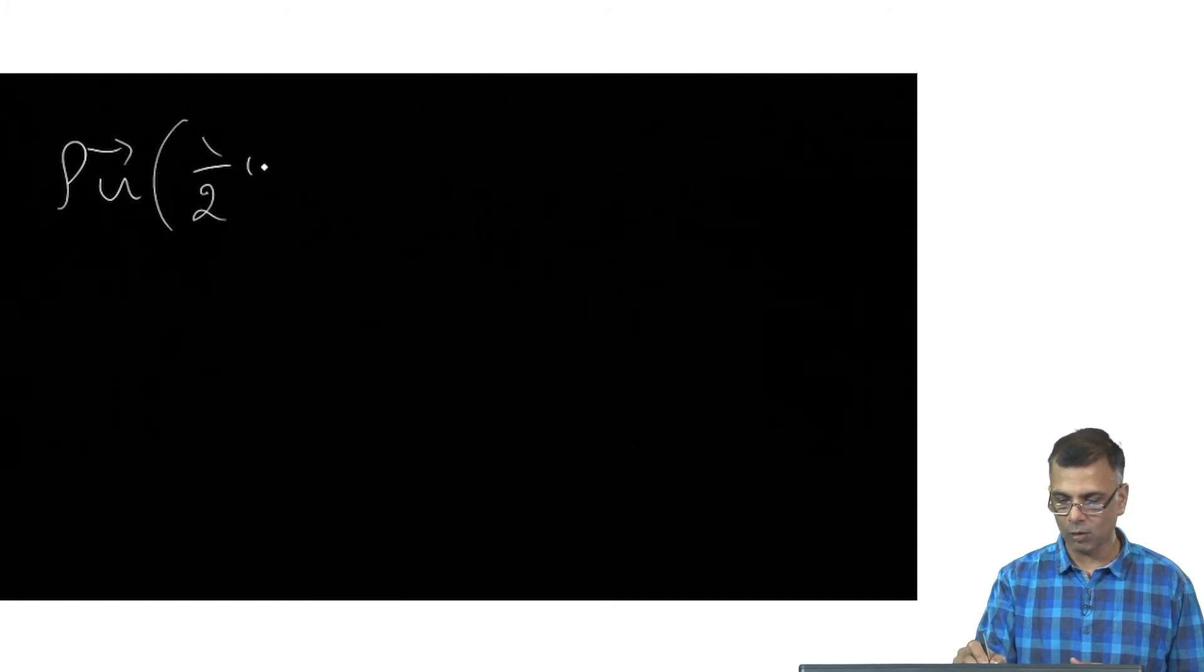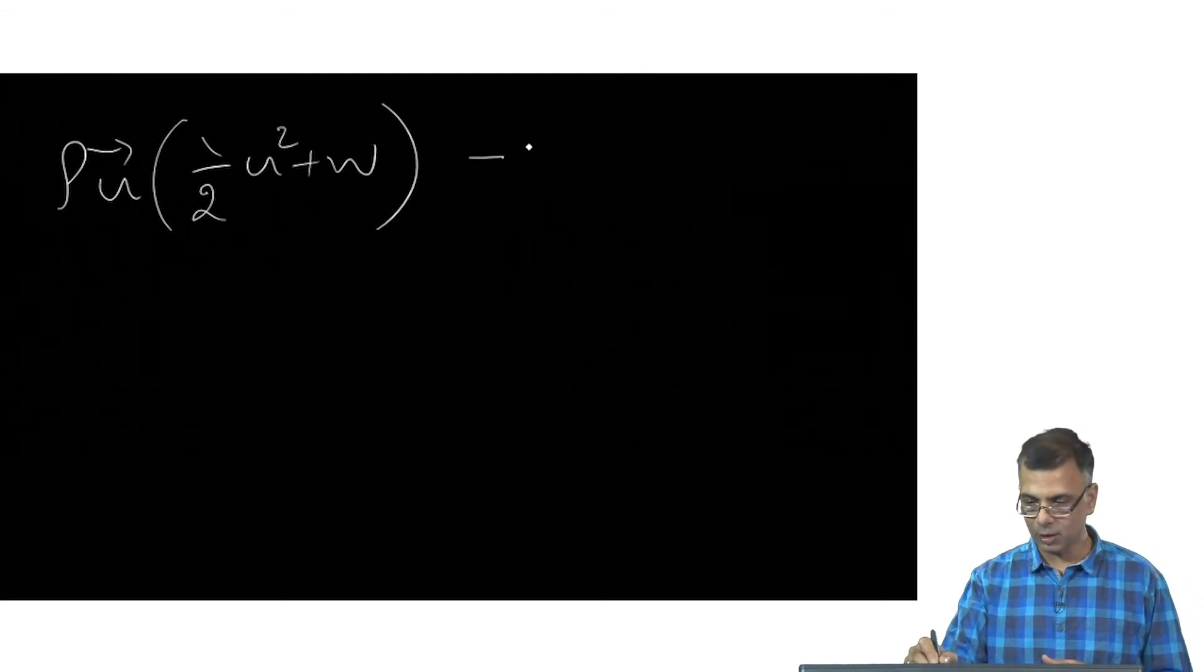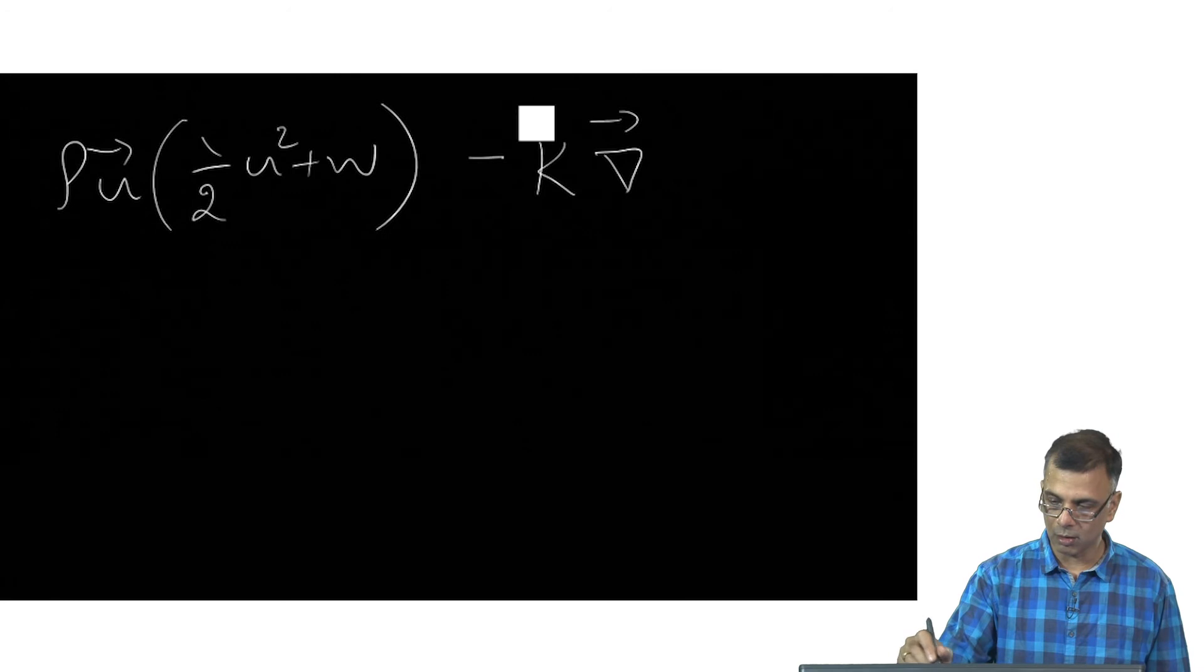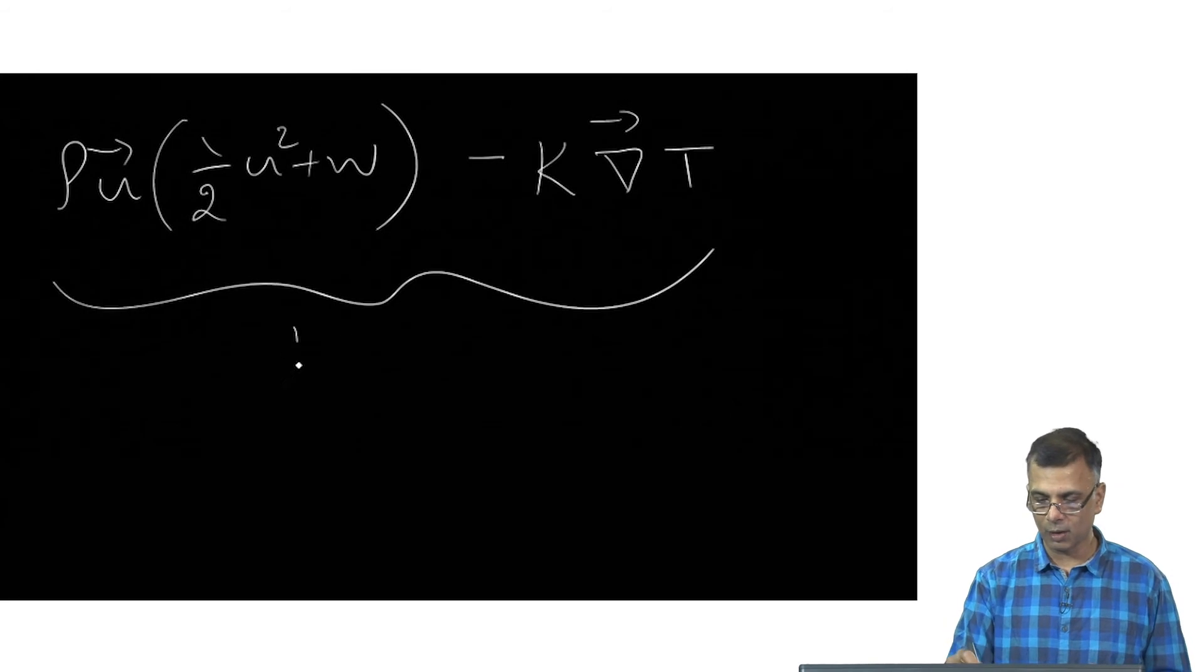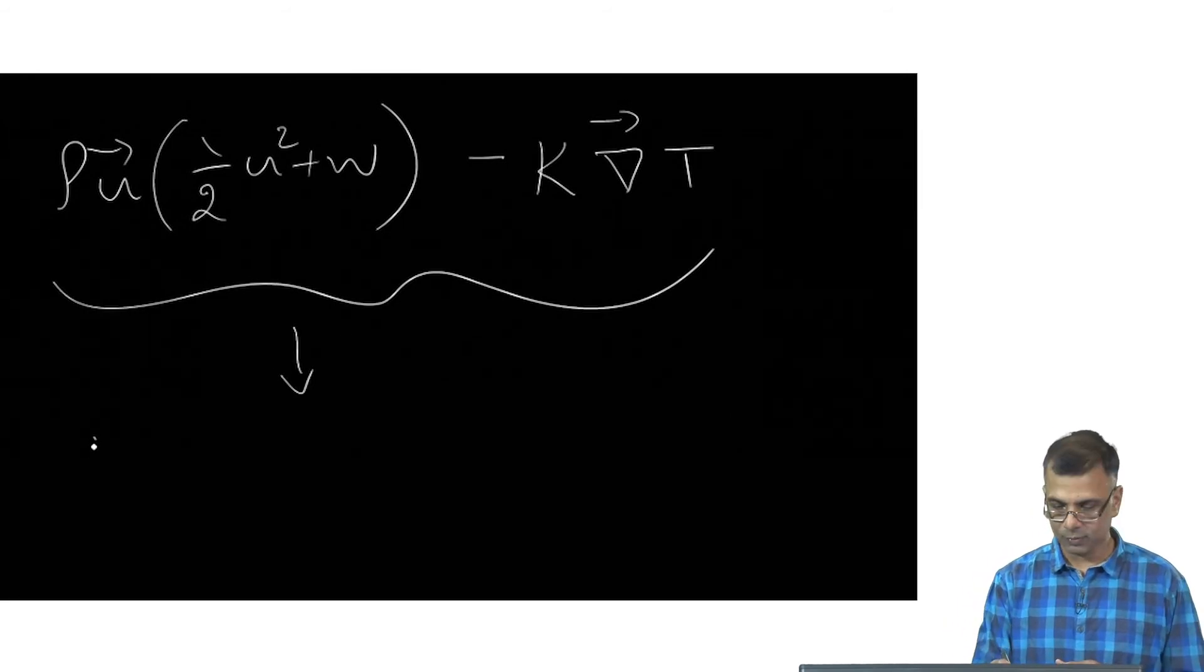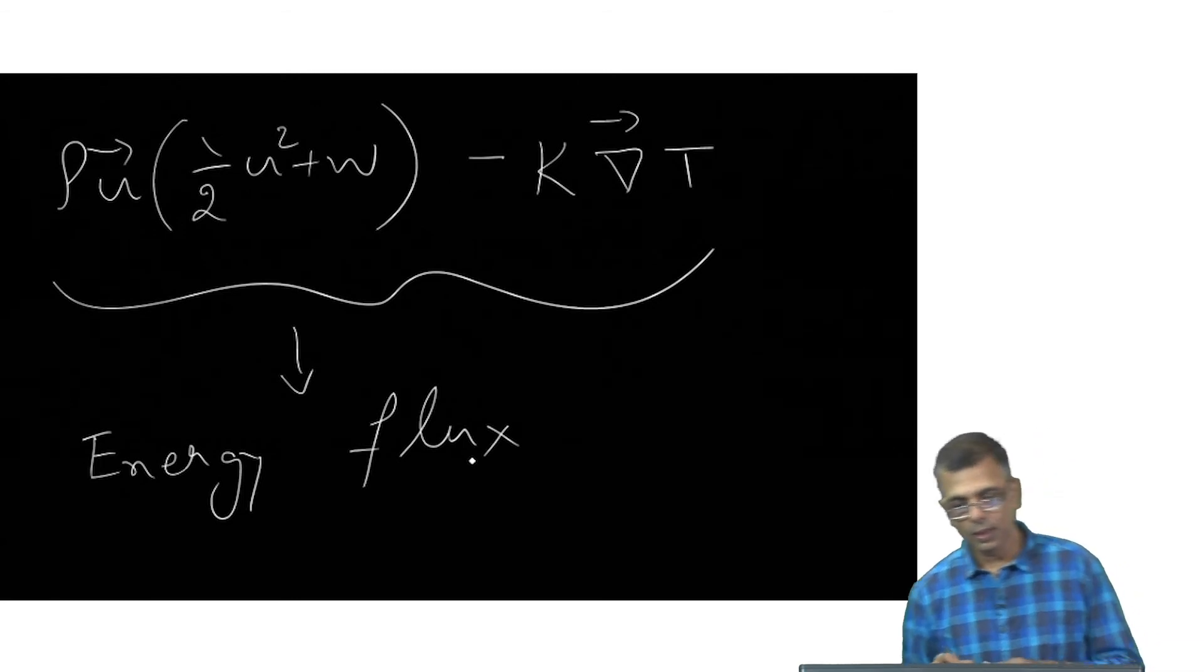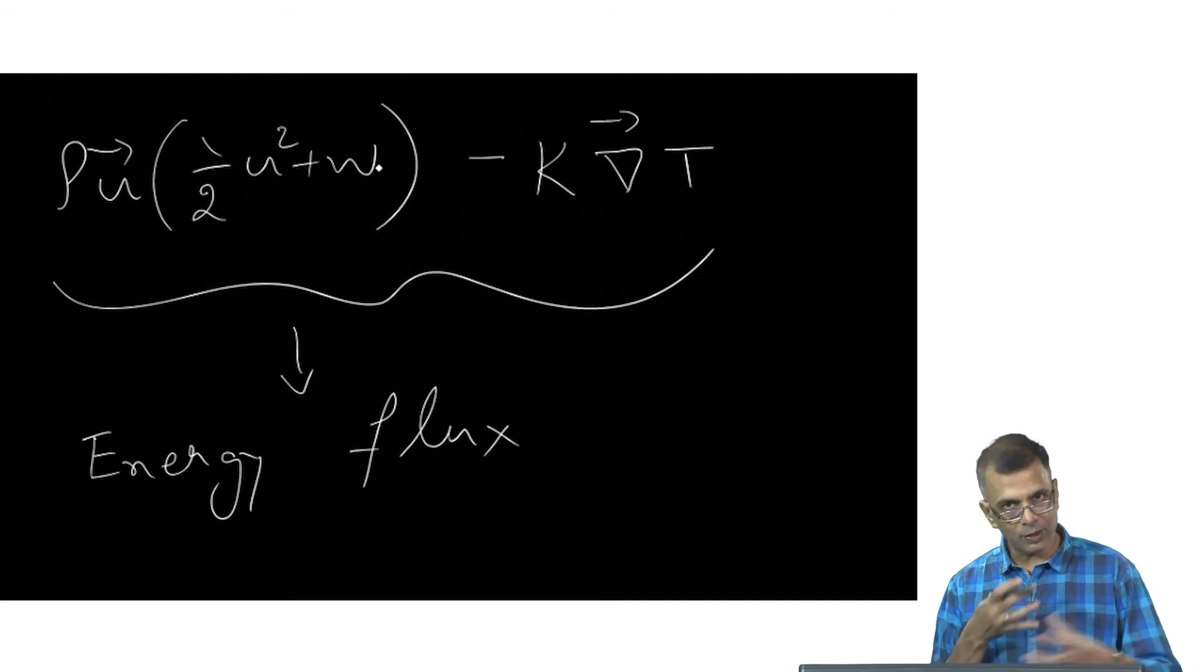So going by the same token, the quantity rho u times one half u squared plus enthalpy density minus, sorry, this should not have a, this is just a coefficient. This entire thing is the energy flux. Again, this is nothing new.